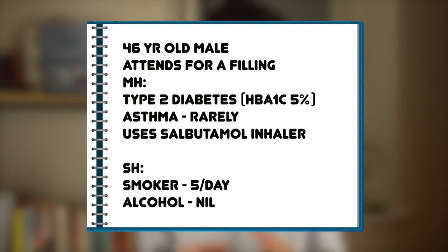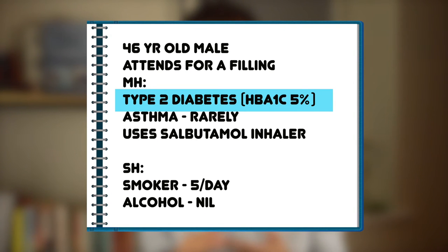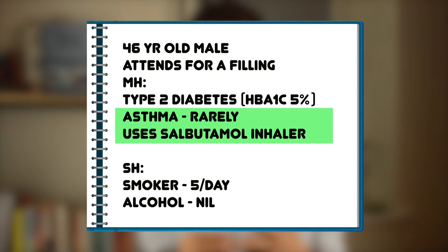So there we've looked at the ASA classification going from 1 to 6. Now let's look at a couple of quick examples. Our first example is a 46-year-old male who attends for a filling. He has a medical background of type 2 diabetes and asthma, and smokes around 5 cigarettes a day. His HbA1c is 5% and he rarely requires his salbutamol inhaler. His diabetes is well-controlled, his asthma is well-controlled, and he is an active smoker — all of these factors fall into an ASA 2 category.